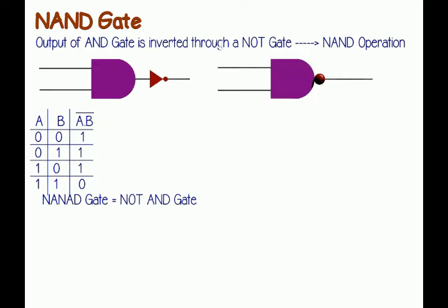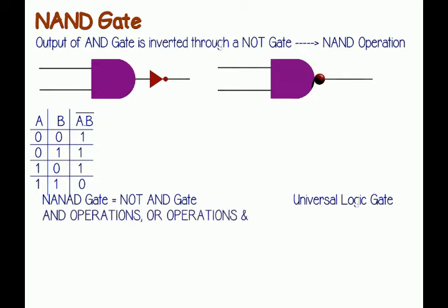A NAND gate is also referred to as a universal logic gate, as all binary operations can be realized by using only NAND gates. There are 3 basic binary operations: AND operations, OR operations, and NOT operations. By these 3 basic operations, one can realize all complex binary operations. Now we will show that all three binary operations can be realized using only NAND gates.